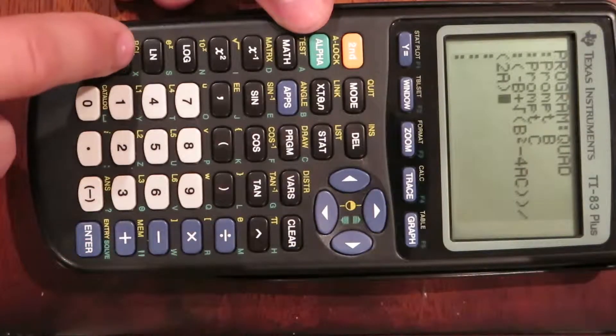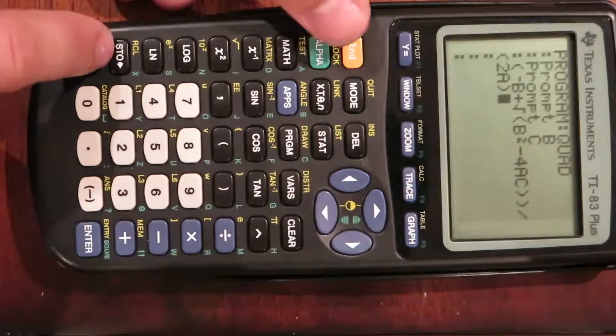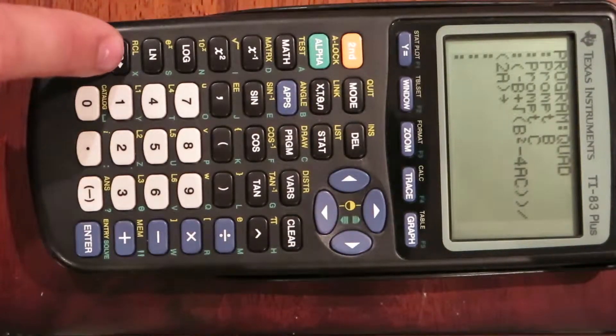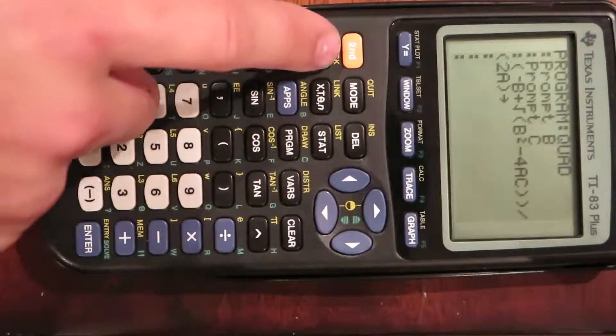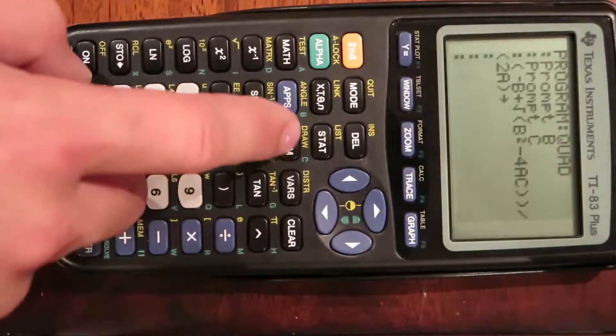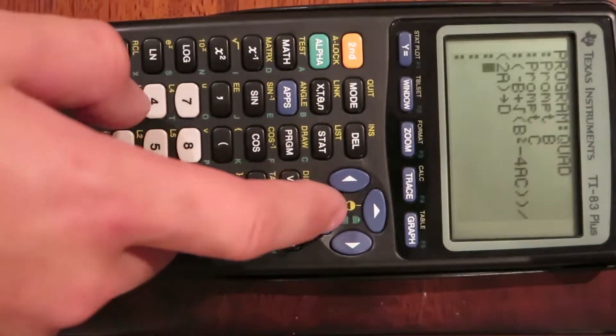Then we're going to store this to another variable, which will be our answer. Go to store, then alpha D. That will be our first equation.